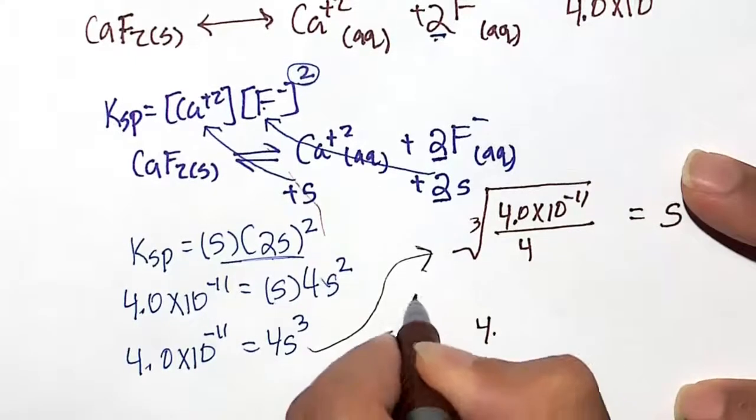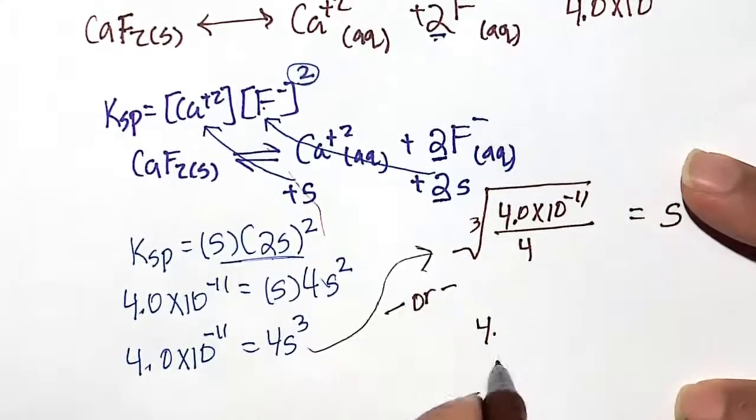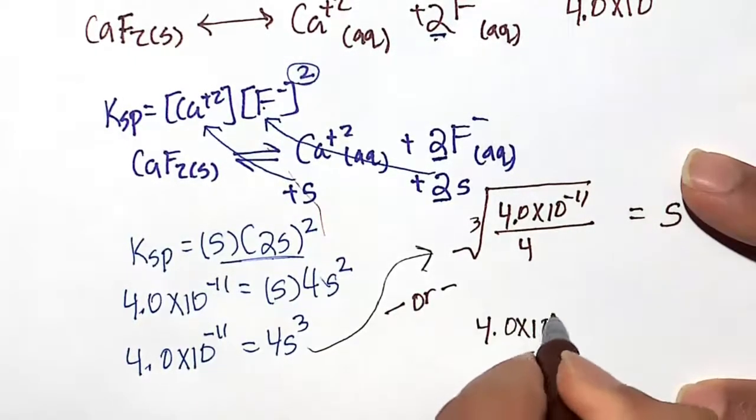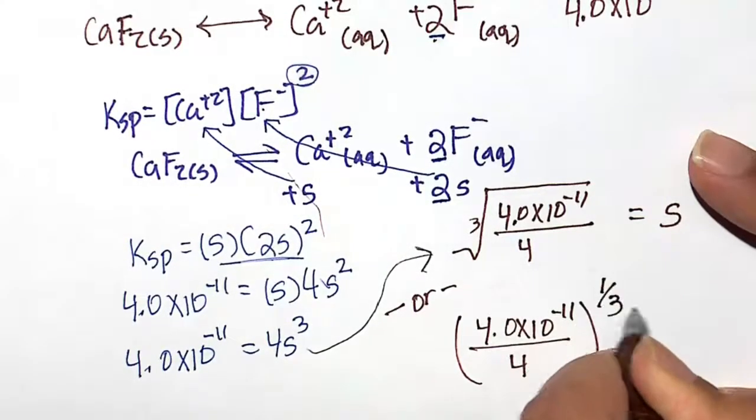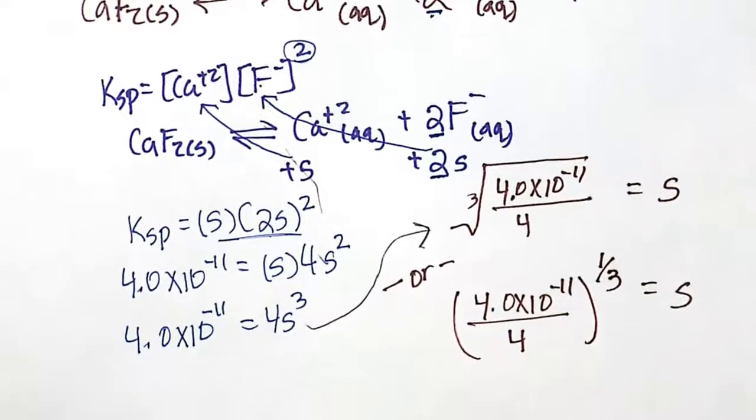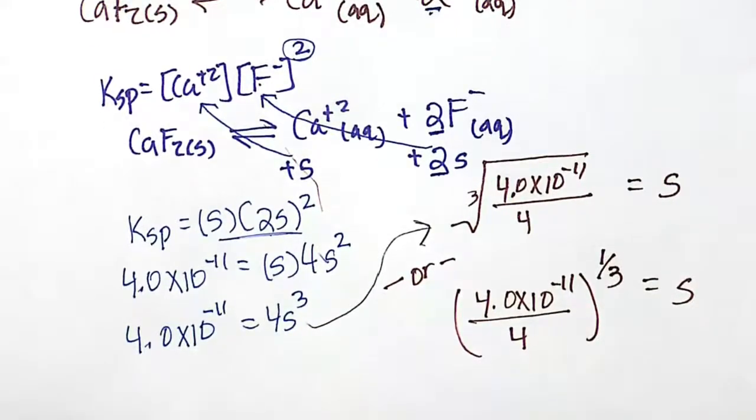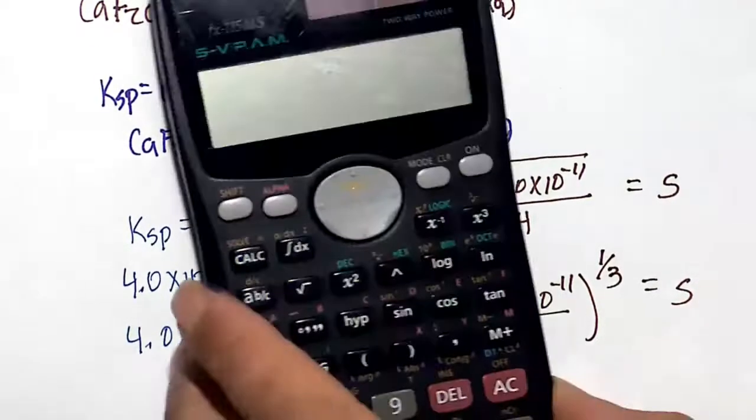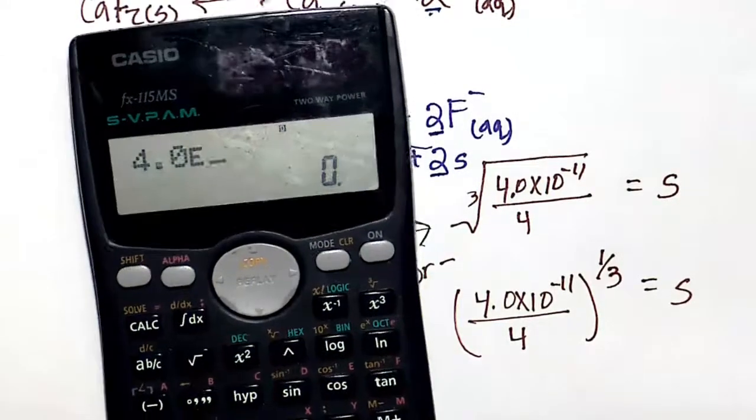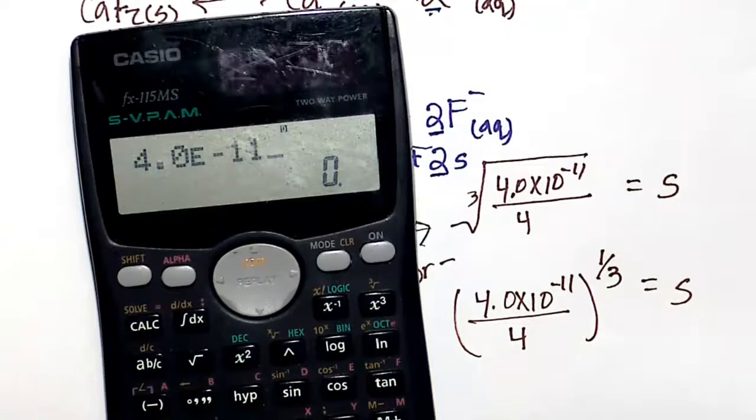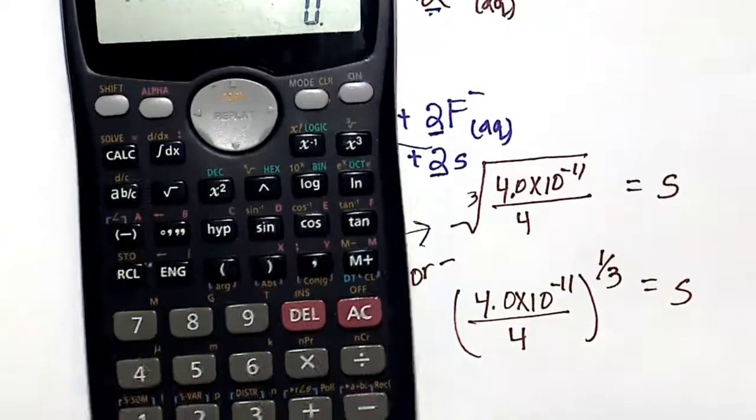So the cube root, another way to do this if you have a calculator that you don't know how to do the cube root or the fourth root, is just do that fraction and raise it to the one-third power. So the cube root is just raising it to the one-third power. Just like a fourth root is raising it to the one-fourth power, a square root is raising it to the one-half power.